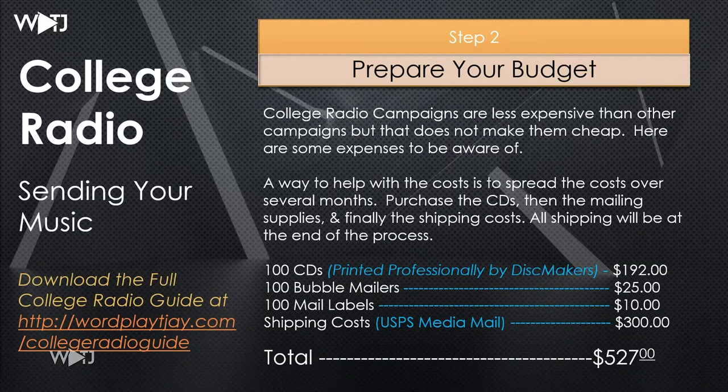Looking at this page right now: it's about $200 for CDs, $25 for mailers, $10 for labels, and then shipping costs. There are also printing costs, which means you might have to buy a printer or ink in order to make labels, or get the labels made somewhere else. You can also use a Sharpie on the envelopes, but make sure you do it in the right format — like a standard letter format with the address and return address on the packages. This is the top-end budget.